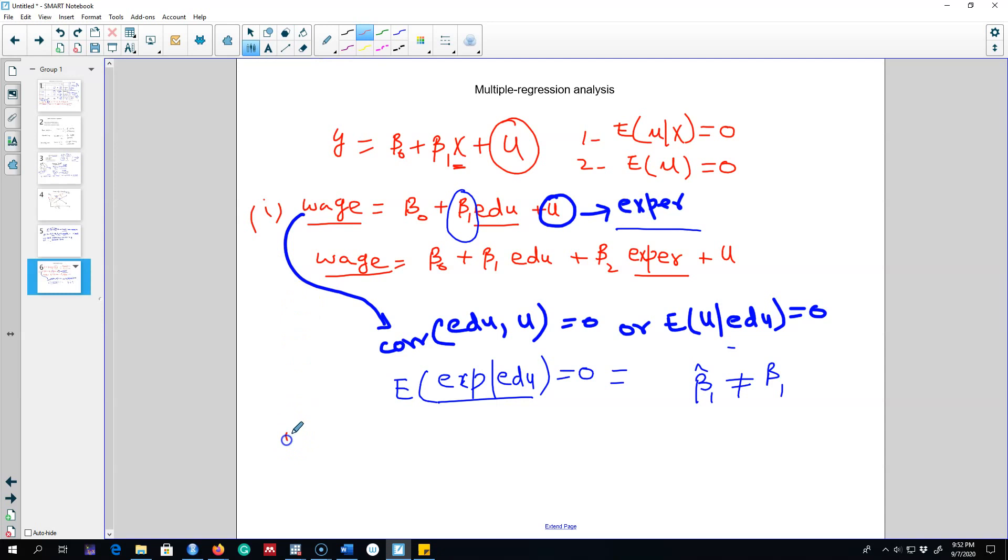This was the first example. So in this example we wanted to consider the problem of explaining the effect of per student spending on standardized test score. If we exclude average income from the model, remember this u term will capture this effect.